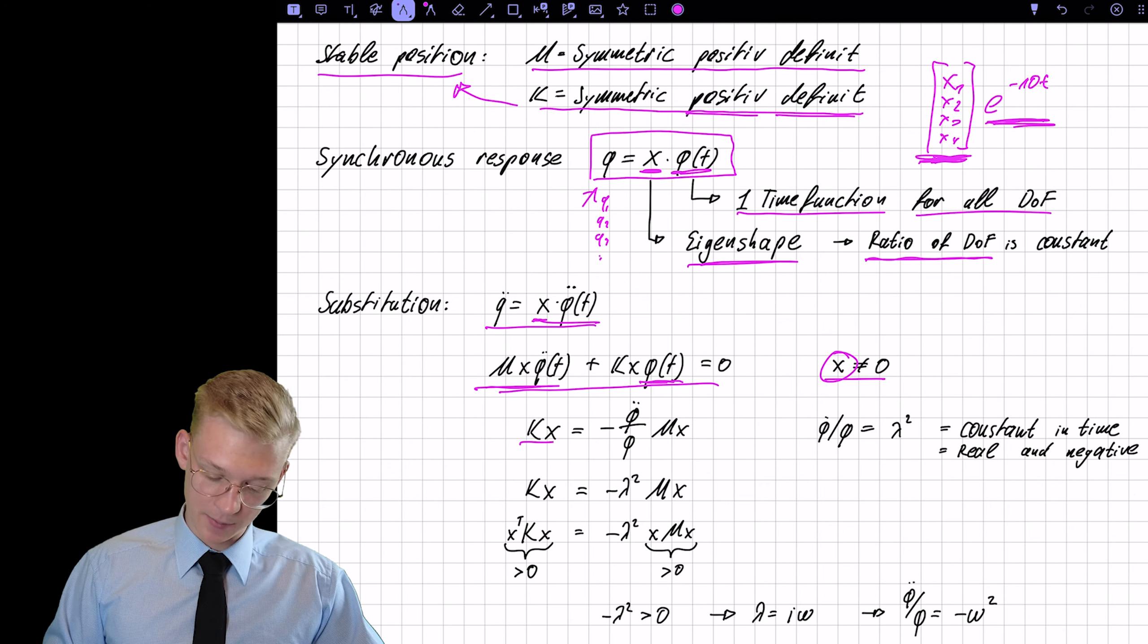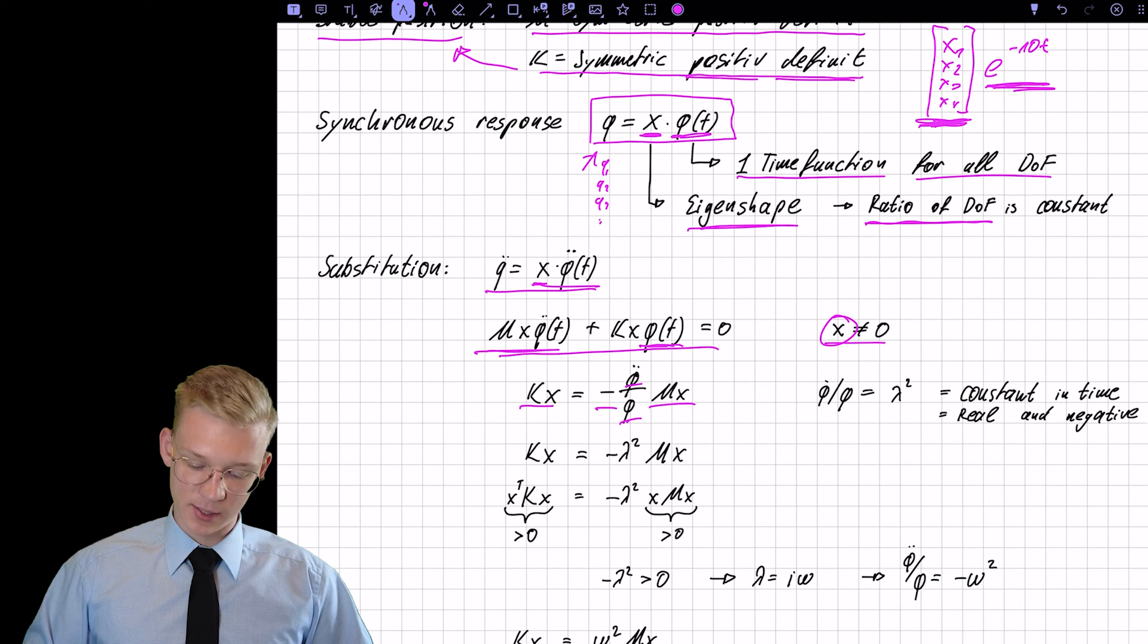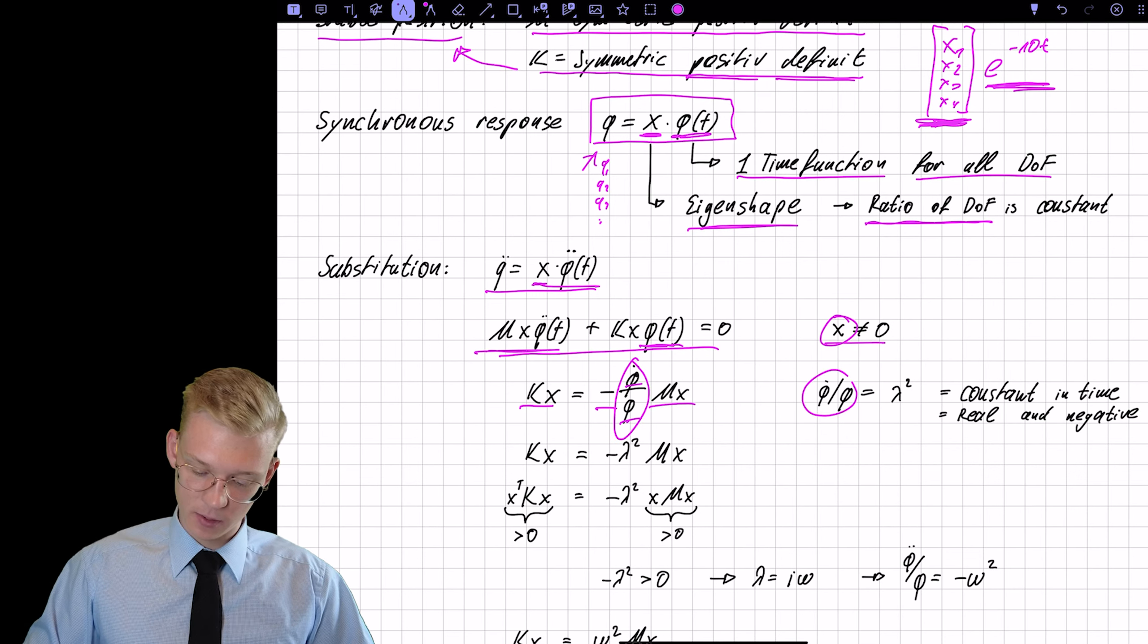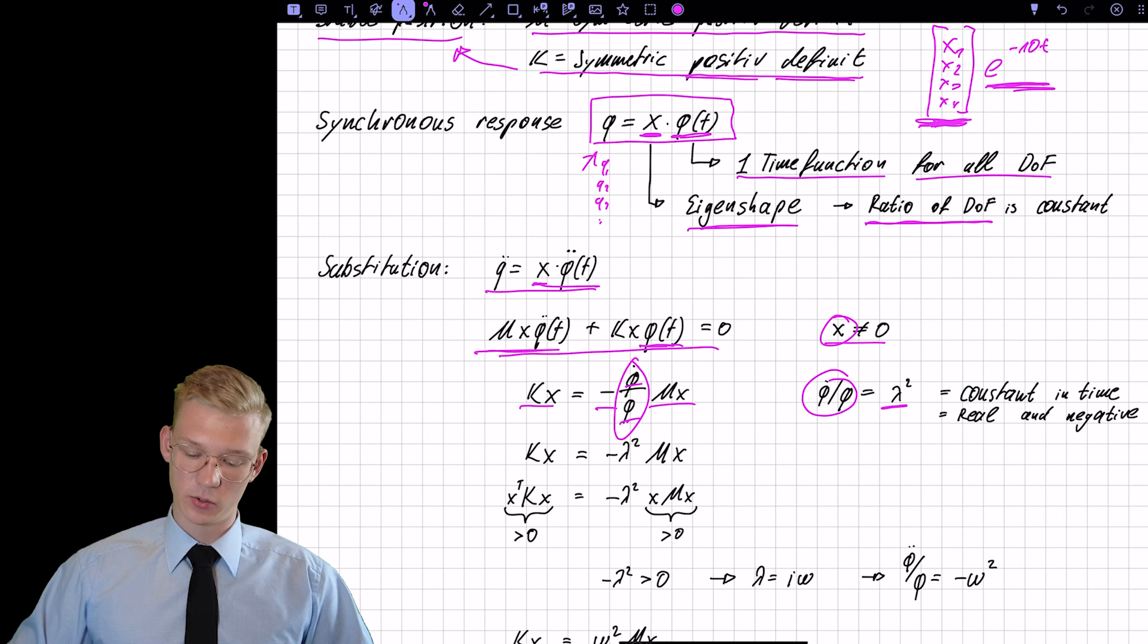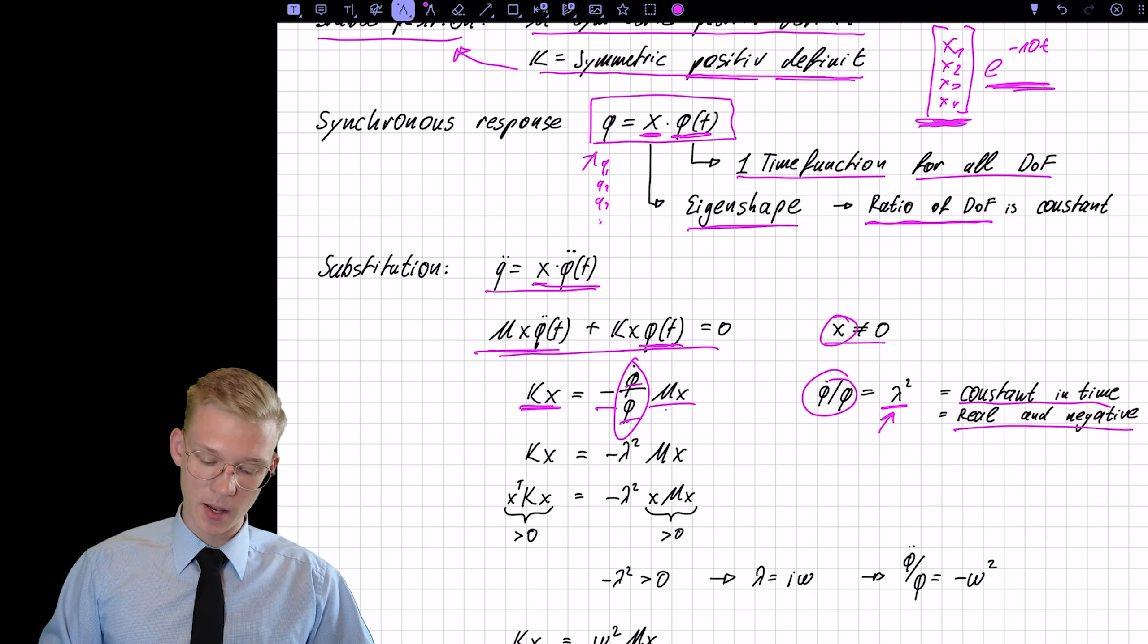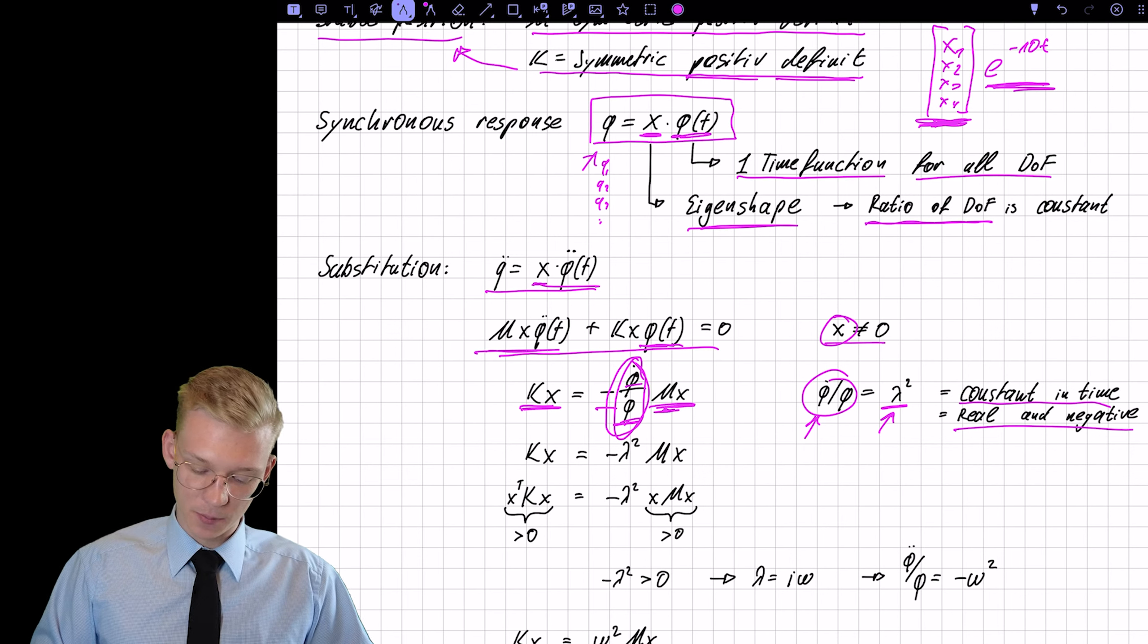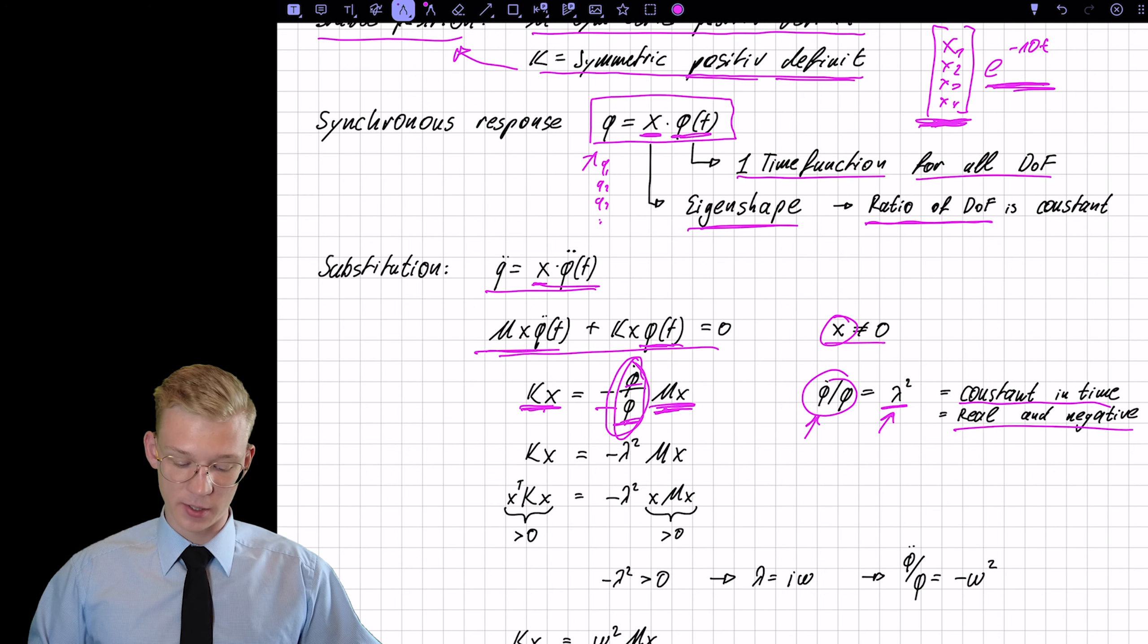So we further remove M X phi double dot to the left and divide by phi here. So we get K X times minus phi double dot divided by phi M X. So now we can set this constant right here to a new value. So we call it for now just lambda. And we know that this lambda is constant in time and it is real and negative.